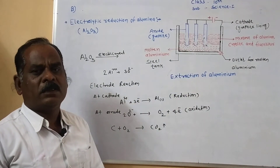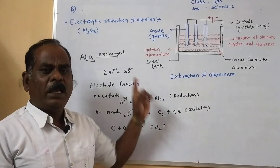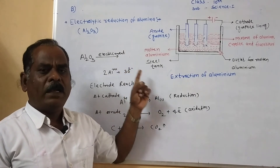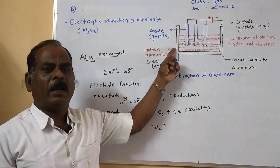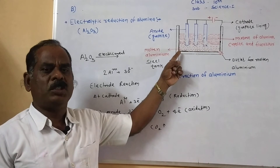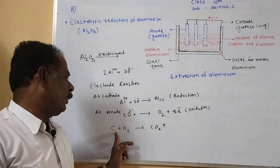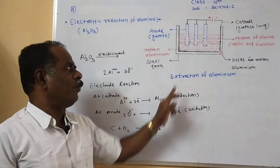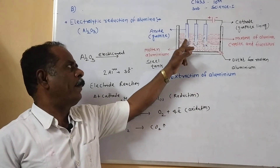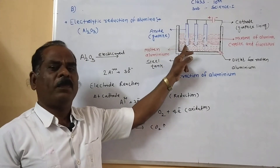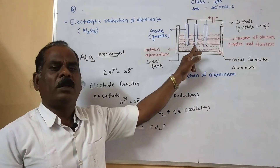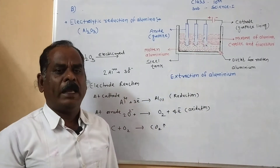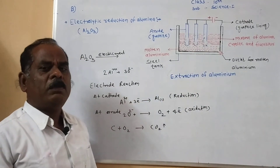The answer is: in the electrolytic reduction of alumina, oxygen is liberated at the anode. At high temperature, oxygen reacts with the graphite and produces carbon dioxide gas. Therefore the size of the graphite rod decreases slowly, and the graphite rod is replaced from time to time.